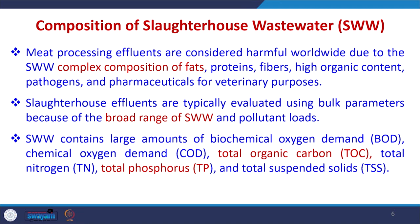Regarding the composition of slaughterhouse wastewater, meat processing effluents are considered harmful worldwide due to their complex composition of fats, proteins, fibres, high organic content, pathogens, and pharmaceuticals. Slaughterhouse effluents are typically evaluated using bulk parameters. Slaughterhouse wastewater (SWW) contains very high amounts of BOD, COD, total organic carbon (TOC), total nitrogen, total phosphorus, and total suspended solids, and will therefore require significant biological treatment.